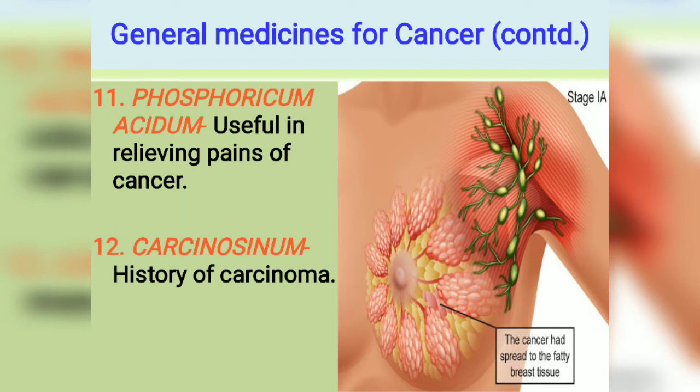Phosphoric Acid is also useful in relieving pains of cancer. Carcinosinum — we have discussed this many times — where there is a family history of carcinoma, Carcinosinum is a very good medicine in 200, 1M, and 10M potency. Doctor Sunimal Sarkar used it very effectively where a family history of cancer is found.